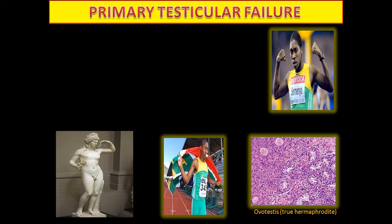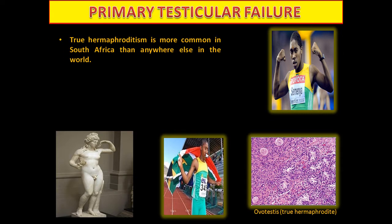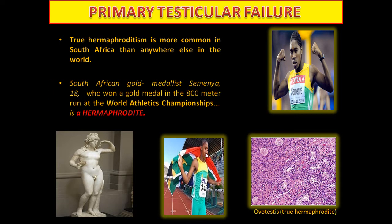This is a case of true hermaphroditism, which is more common in South Africa. South African athlete Semenya, 18 years old, who won a gold medal in the 800-meter run at the World Athletics Championships, is a hermaphrodite. In the hermaphrodite we can see what is called an ovotestis, meaning we find seminiferous tubules and Graafian follicles in the same gonad — so it is called an ovotestis.